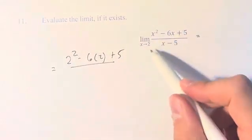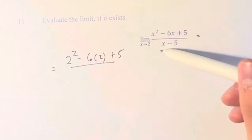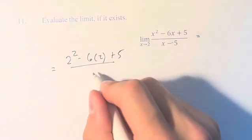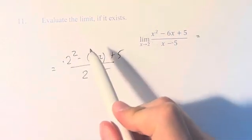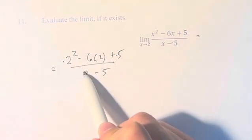We have a rational function here, so we would be worried about the denominator being equal to 0. But if we plug in 2 wherever we see x, the result is that we have 2 squared minus 6 times 2 plus 5 over 2 minus 5.